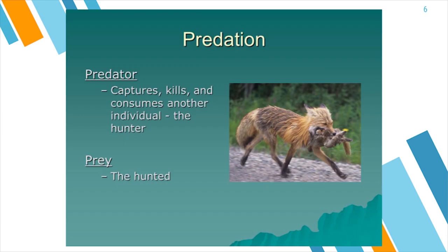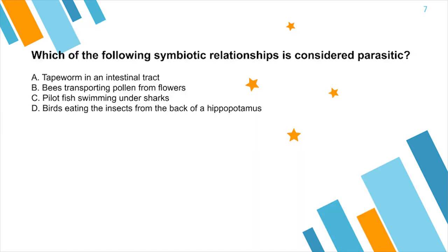Now let's go over some sample Science Bowl practice questions for biology and ecology related to symbiotic relationships. Biology multiple choice: Which of the following symbiotic relationships is considered parasitic? A. Tapeworm in an intestinal tract. B. Bees transporting pollen from flowers. C. Pilot fish swimming under sharks. Or D. Birds eating the insects from the back of a hippopotamus. The answer is A, the tapeworm in an intestinal tract. The reason is because the tapeworm, which is the parasite, is benefiting at the cost of the organism with the intestinal tract. The tapeworm is receiving free nutrition and shelter, while the organism, which is the host, is being eaten from the inside.